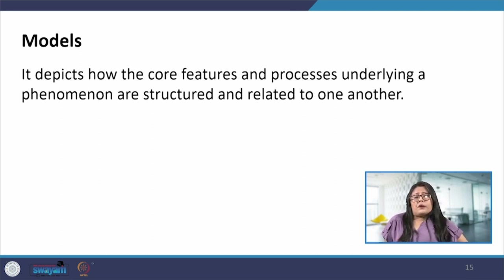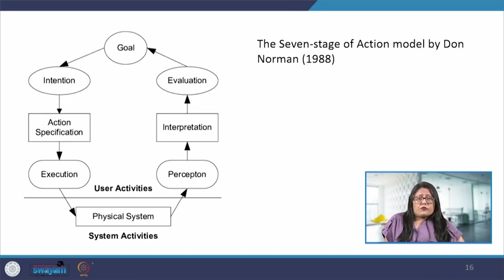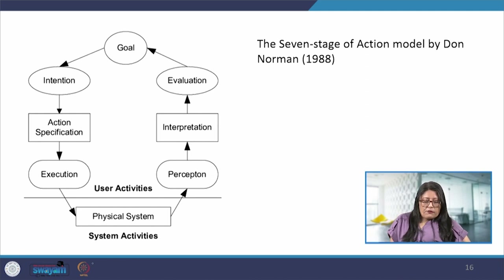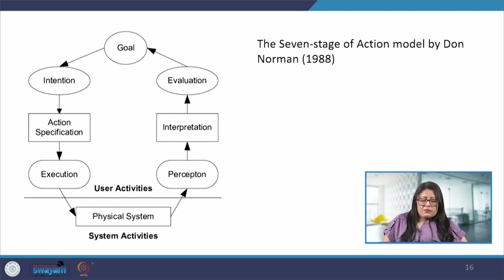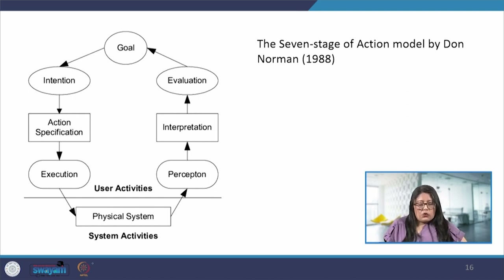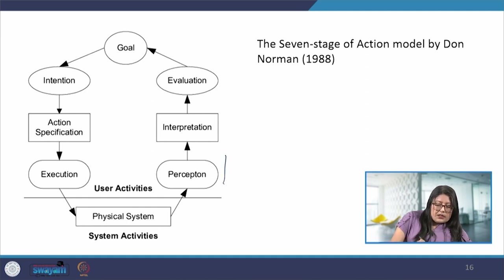Models are visual representations of an idea — they depict how the core features and processes underlying a phenomenon are structured and related to one another. For example, Don Norman developed a number of models of user interaction based on theories of cognitive processes, intended to explain the way users interact with interactive technologies. These included the seven stages of action model, which describes how users move from their plans to executing physical actions and evaluating the outcome with respect to their goal. We can see in the diagram how users perceive, interpret, and evaluate to move towards the goal.